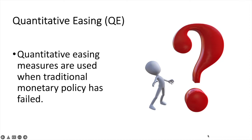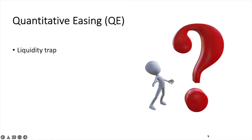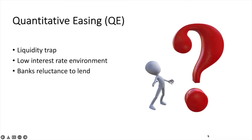Quantitative easing measures are used when traditional monetary policy has failed. In a low or zero interest rate environment, it is very difficult to lower interest rates any further. Individuals are likely to prefer holding cash rather than put their money in low return financial assets — this is known as the liquidity trap. To get the economy moving, the central bank can use QE to inject liquidity into the economy. If banks are reluctant to lend in times of economic uncertainty, the central bank can intervene and use QE as an emergency response to a crisis such as the credit crisis in 2008 and COVID-19 in 2020. Again, the objective is to inject liquidity into the economic system.